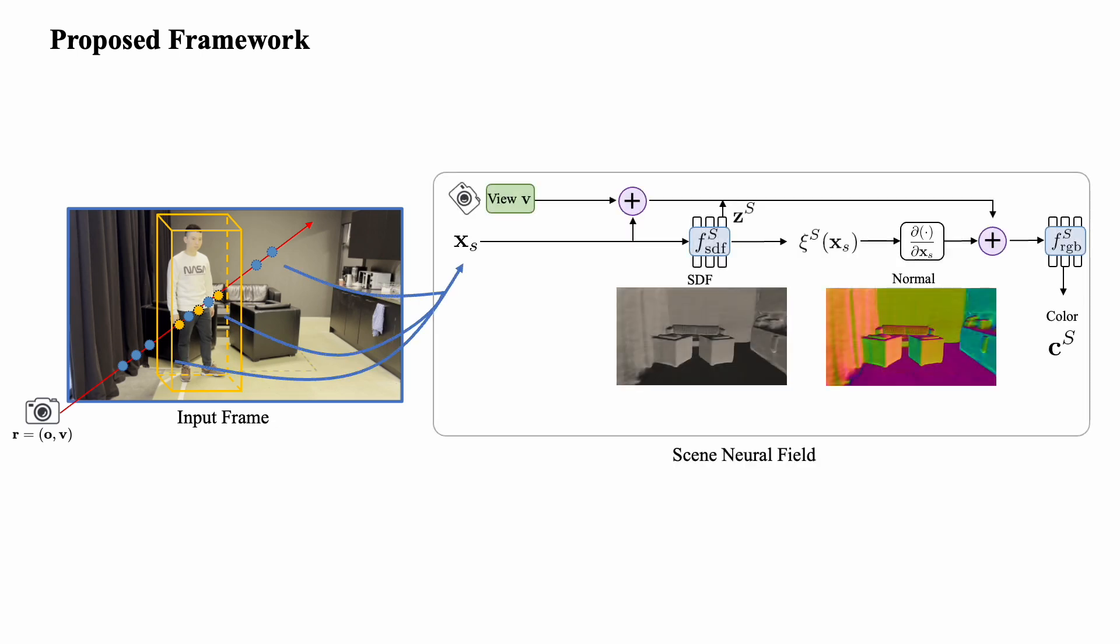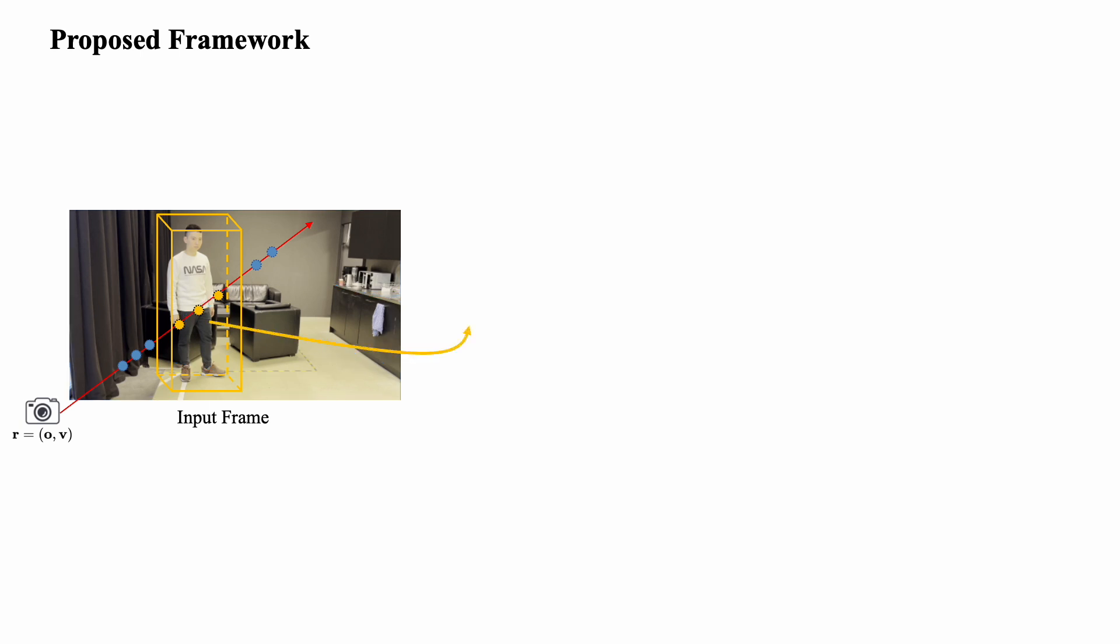For the query points belonging to the scene, the scene neural field predicts the SDF and RGB values based on their 3D coordinates. For the query points belonging to the human body,